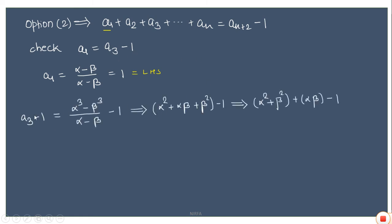For the right-hand side, a₃ = (α³ - β³)/(α - β). The factor (α - β) cancels, leaving α² + αβ + β² = (α² + β²) + αβ = 3 + (-1) = 2. So a₃ - 1 = 2 - 1 = 1, which matches the left-hand side of 1. Option 2 is correct. You can also verify by taking two terms: a₁ + a₂ = a₄ - 1, and that also checks out.